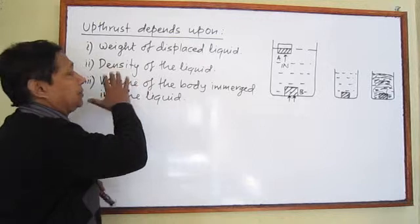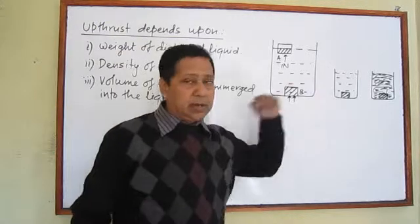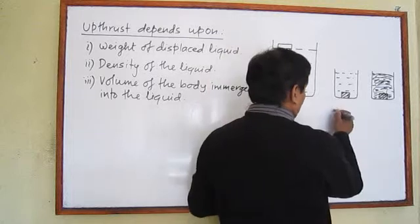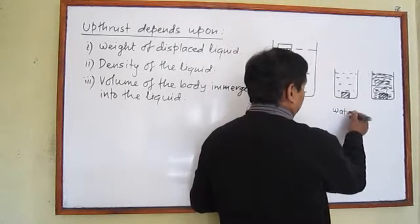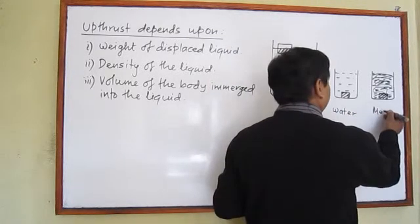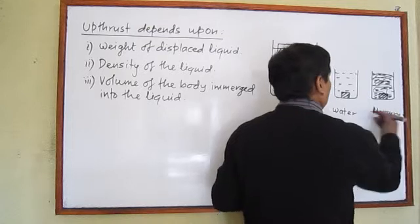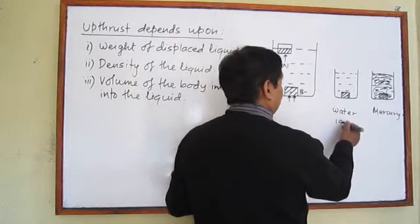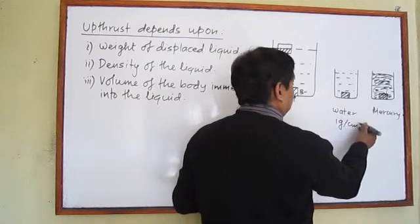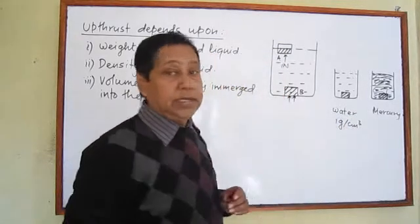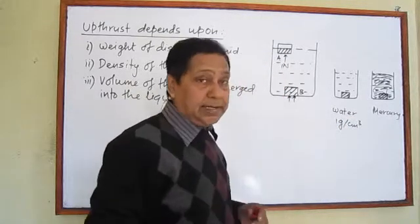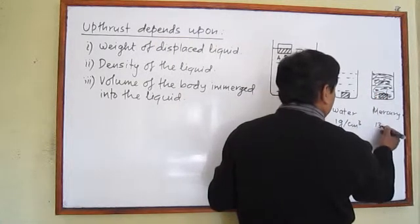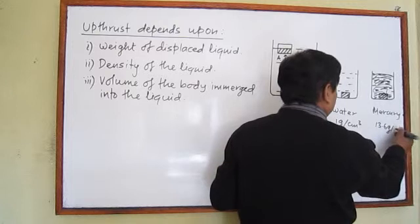The second point: upthrust depends upon the density of the liquid. Here I have taken two different liquids — let's say this is water and this is mercury. The density of water is comparatively very less, about one gram per cubic centimeter. The density of mercury is 13.6 grams per cubic centimeter.